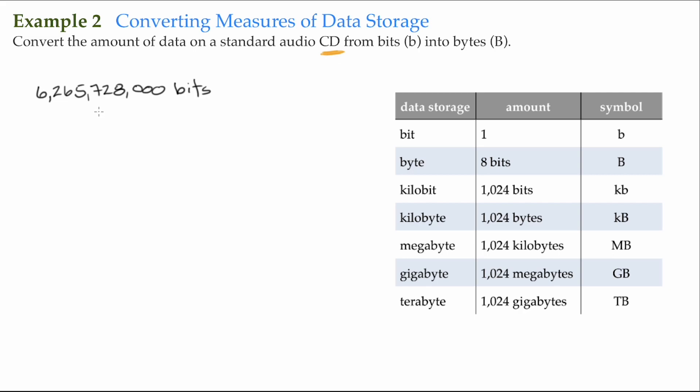So if I want to convert the bits of data, this small letter b into bytes of data, we can see here that for a byte, there are eight bits in a byte.